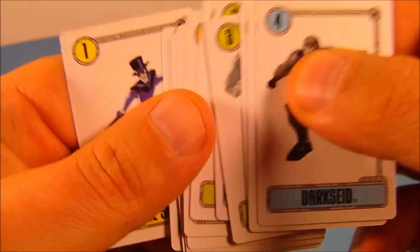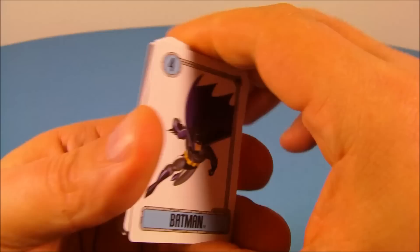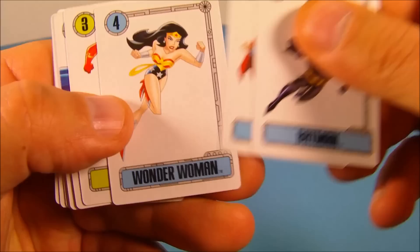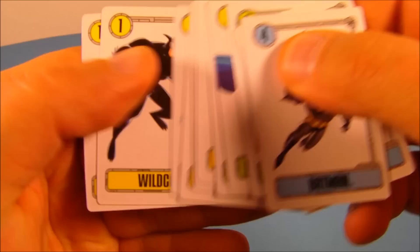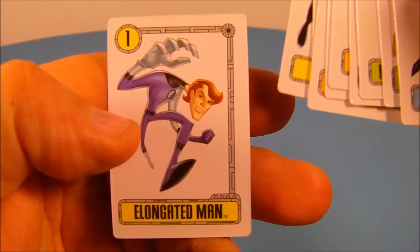And then for the Heroes, let's see who we have here. We have Batman, Superman, Wonder Woman, The Flash, Martian Manhunter, Green Lantern, Zatanna, Black Canary, Green Arrow, The Atom, Wildcat, and Elongated Man.